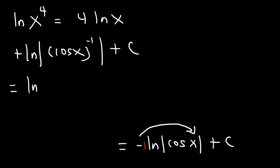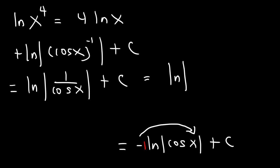Cosine to the negative one is equal to the natural log of 1 over cosine. Using the reciprocal identity, 1 over cosine is secant, so this is the natural log of secant x plus C. This is the integral of tangent x: ln|sec(x)| + C.